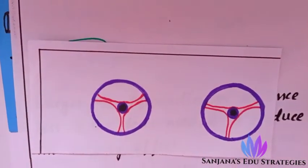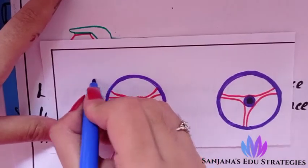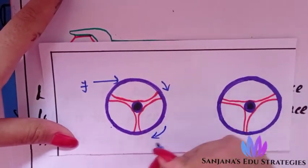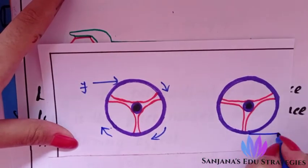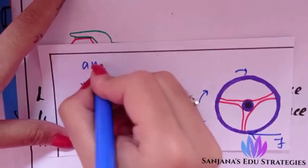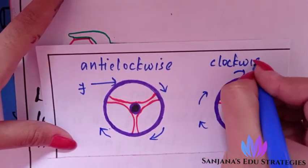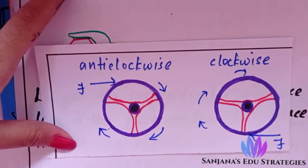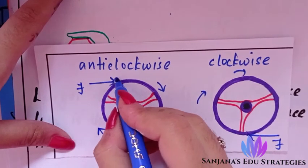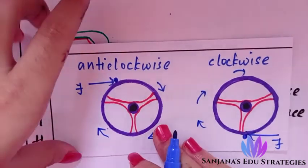Now take a steering wheel. If we apply force at one point, it moves in one direction — say anticlockwise. If we apply force at another point, it moves clockwise. By changing the point of force application, we can change the direction of rotation of the wheel.